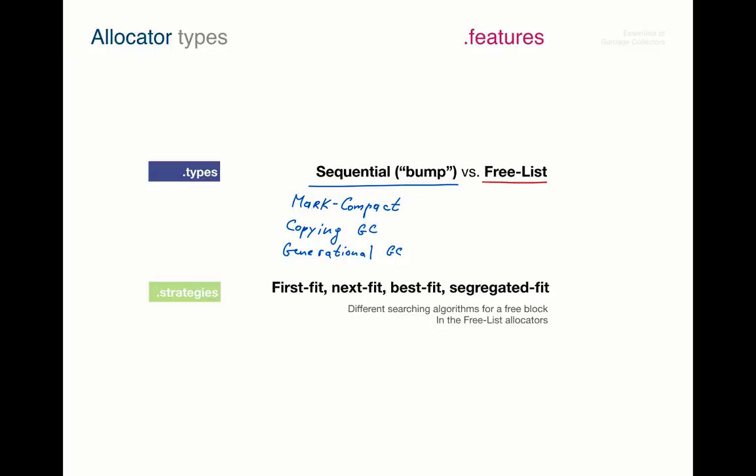The free list allocator has to reuse the freed blocks, and for this it tracks them in a list-like data structure. We also said there are several strategies for searching these free blocks. These are first-fit, next-fit, best-fit, and the segregated-fit. And the free list allocator is used in systems with mark-sweep, and reference-count in garbage collectors, and also in system with manual memory management.